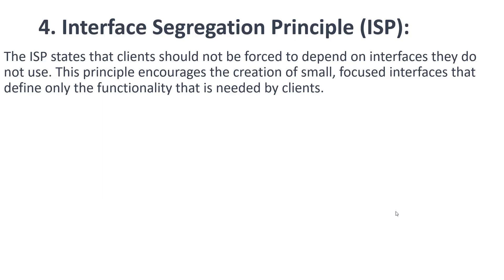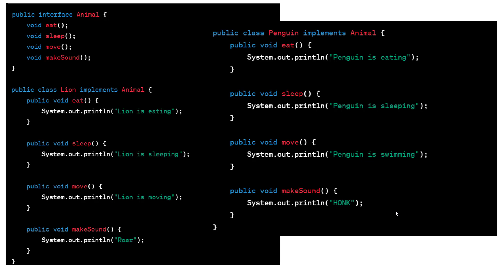The fourth principle is the Interface Segregation Principle. The ISP states that clients should not be forced to depend on interfaces they do not use. This principle encourages the creation of small, focused interfaces that define only the functionality needed by the client. For example, here we have an Animal interface with methods: eat, sleep, move, and makeSound.